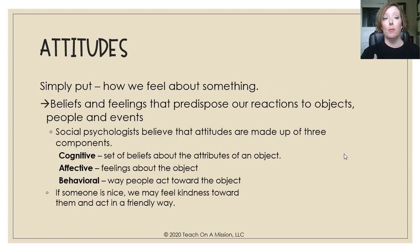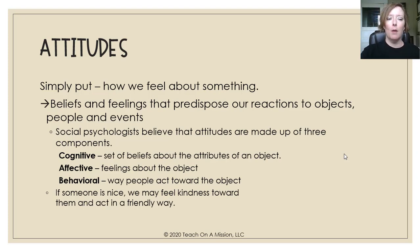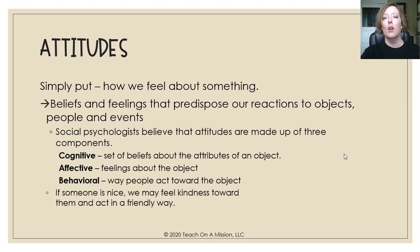Another concept you need to be familiar with is attitudes — simply put, how we feel about something. These are beliefs and feelings that predispose our reactions to objects, people, and events. Social psychologists believe that attitudes are made up of three components — the ABCs of attitudes: Cognitive (a set of beliefs about the attributes of an object), Affective (feelings about the object), and Behavioral (the way people act towards the object). If someone is nice, we may feel kindness towards them and act in a friendly way.